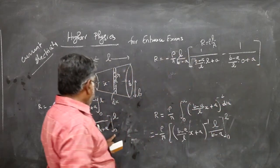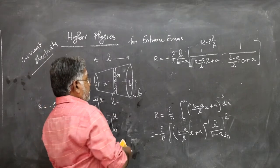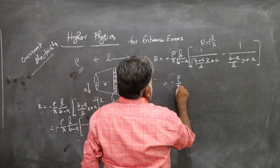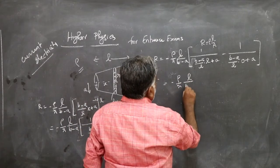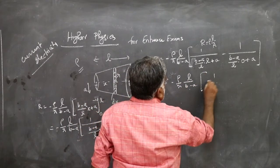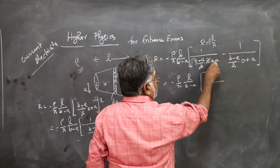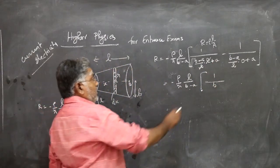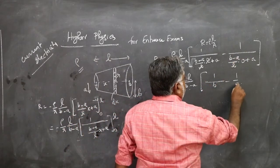So minus rho by pi L by B minus A, 1 by L, L will cancel, so minus A, 1 by B. Here this will vanish, so minus 1 by A.